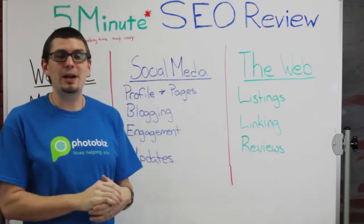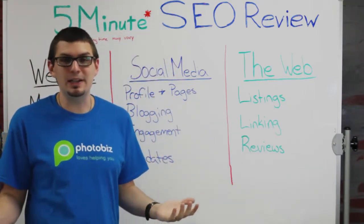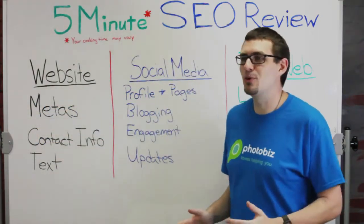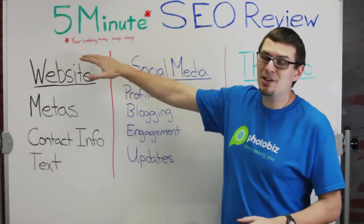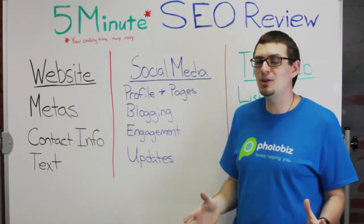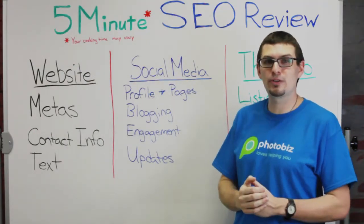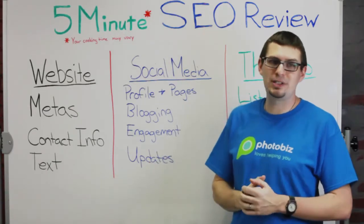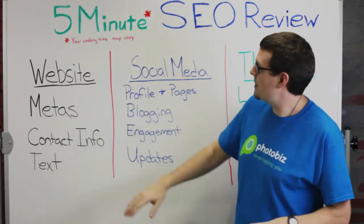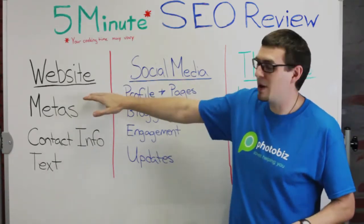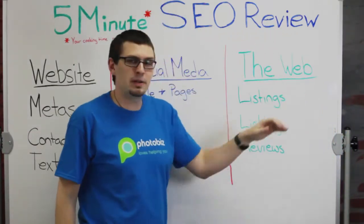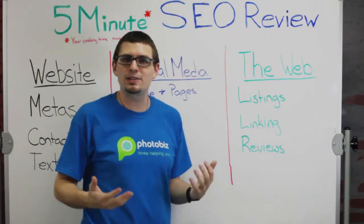Today's topic is going to be a five-minute SEO checklist. You'll notice the asterisk, because if there are things on this list that you're not doing, it's obviously going to take you a little bit more than five minutes — but the check itself should take about five minutes. Today we're going to discuss three topics: we're going to look at your website, your social media, and then how your business appears on the rest of the web.